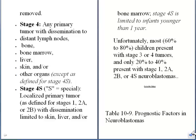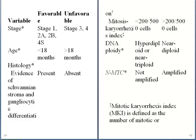Now let us talk about some prognostic factors in neuroblastoma that lead to either favorable or unfavorable prognosis. Favorable prognosis is associated with: tumor in stage 1, 2a, 2b, or 4s; age less than 18 months; histological evidence of schwannian stroma and gangliocytic differentiation; mitosis-karyorrhexis index less than 200 per 500 cells; hyperdiploid or near-triploid DNA ploidy; and no amplification of the MYCN gene.